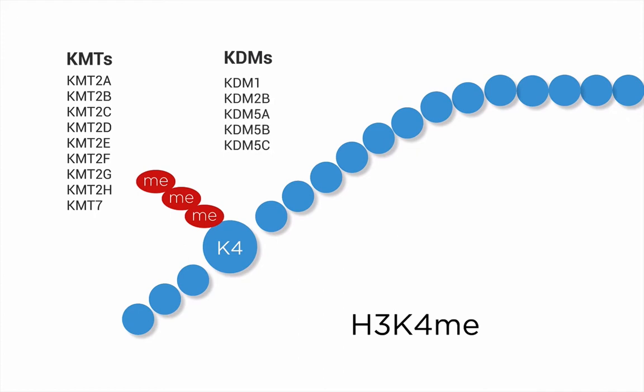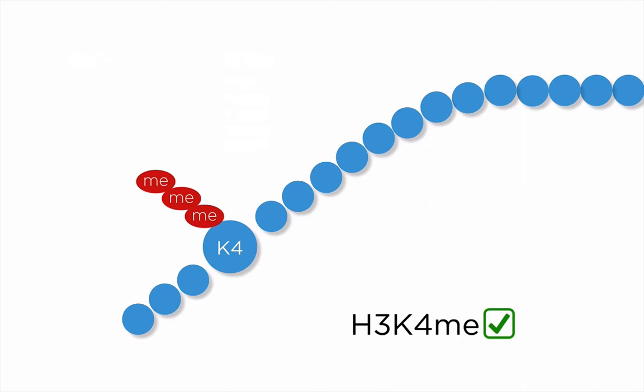In general, all H3K4 methylations are found in the promoter regions of active genes and therefore mark active transcription sites. But methylation of histone residues does not automatically open up chromatin like acetylation does. So how is the transcriptional activation conveyed in this case? H3K4 methylation recruits a number of regulatory proteins that are able to influence chromatin structure.